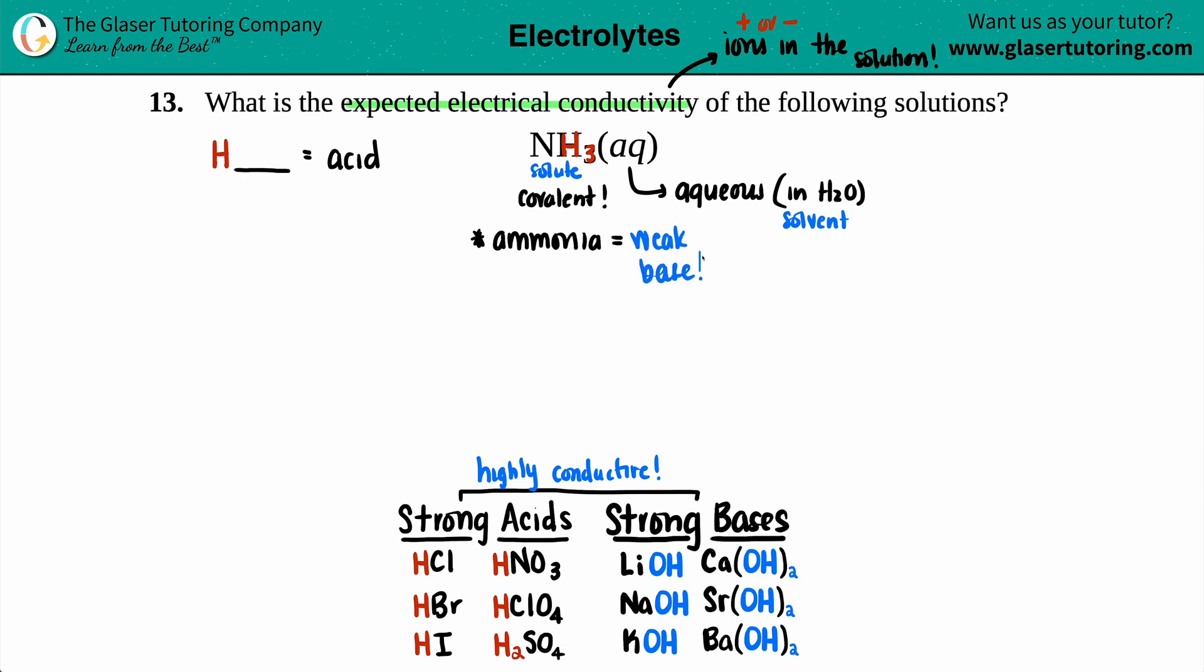And ammonia is always a weak base. Well, I mean, not always. It really depends on what it's reacting with. But in this case, with water, NH3 is going to be the more basic of the two. Now, if we keep with this weak idea, if it's a weak acid or a weak base, that just means that it's going to be a weak electrolyte. And if it's a strong acid, strong base, it's a strong electrolyte. So it's going to be highly conductive. So this is the opposite. If it's weak basic, if it's a weak base, it's a weak electrolyte.